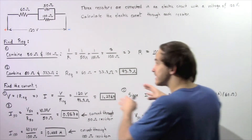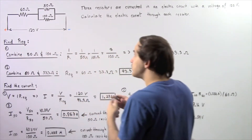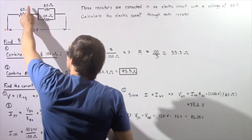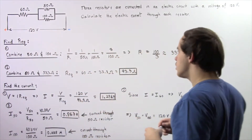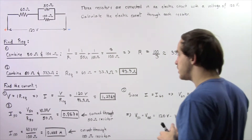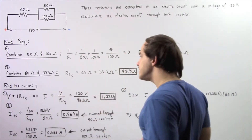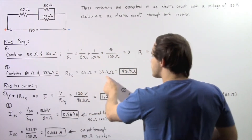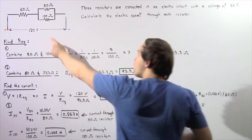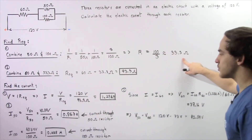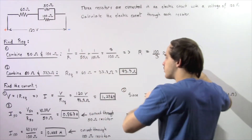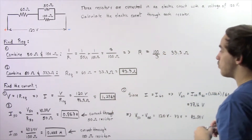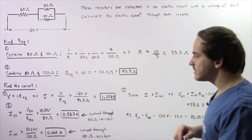Now in the next part of this step, we want to combine this resistor and the 60 ohm resistor, which are placed in series with respect to one another. To find the equivalent resistance that will replace these three resistors, we simply take the algebraic sum of the 60 ohm resistor and this resistor. So 33.3 ohms plus 60 ohms gives us 93.3 ohms.